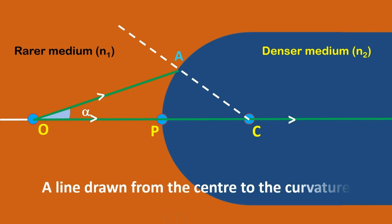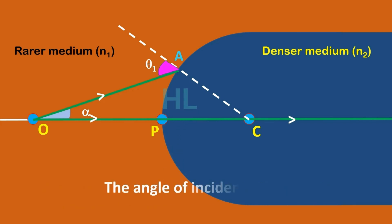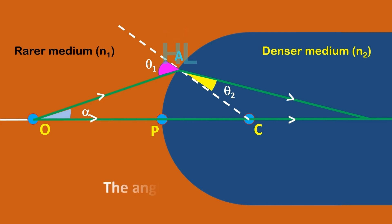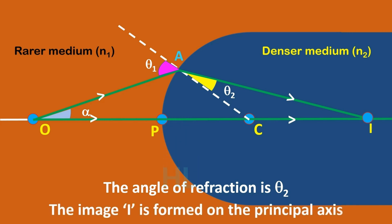A line drawn from the centre to the curvature will be the normal to the curve at that point. The angle of incidence is theta1. The ray bends towards the normal in the denser medium. The ray obeys Snell's law: N1 sin theta1 is equal to N2 sin theta2. The angle of refraction is theta2, and the image I is formed on the principal axis.